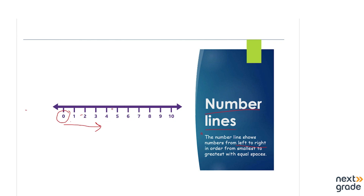Or you can say unit distance. You can see from 0 to 1, from 1 to 2, from 2 to 3 — it's 1 unit. So this is how the unit distance works — it is 1 unit of distance.